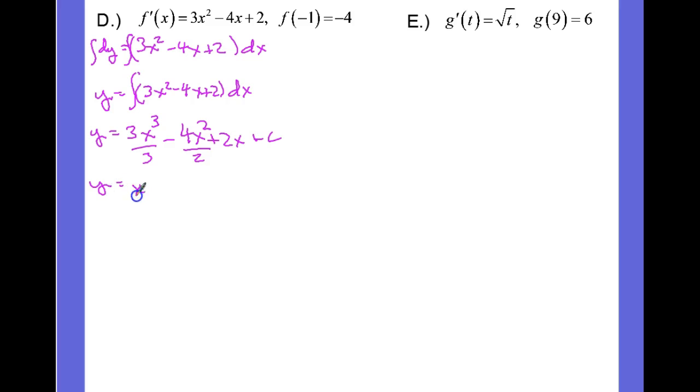Simplifying, we have x cubed minus 2x squared plus 2x plus C.